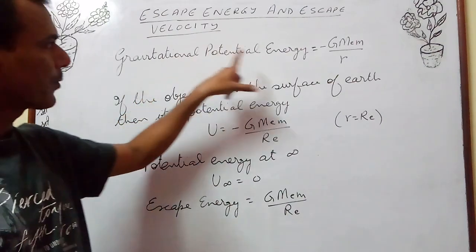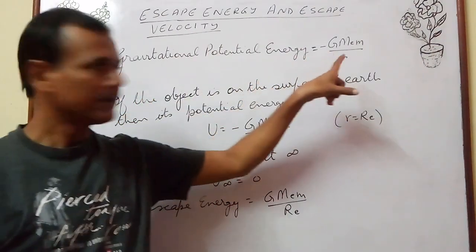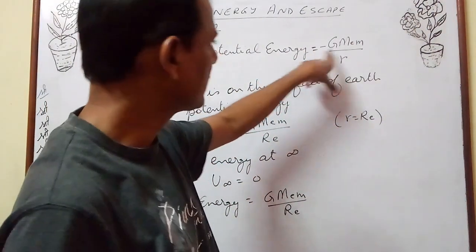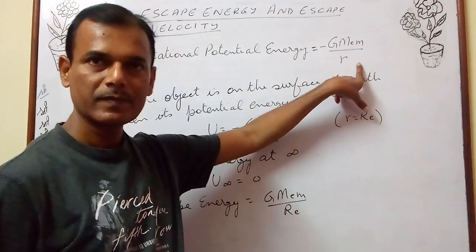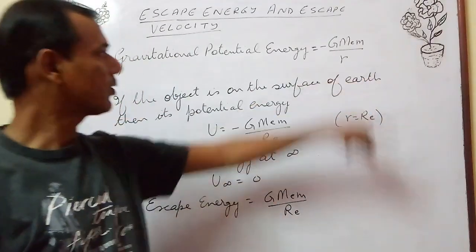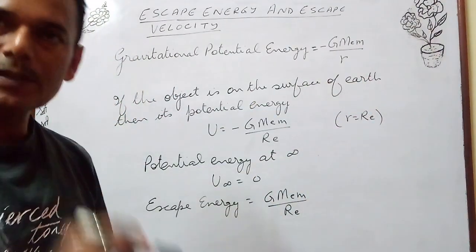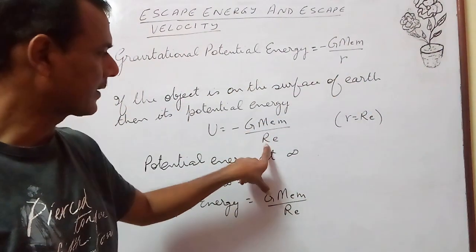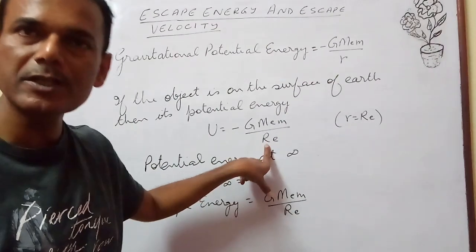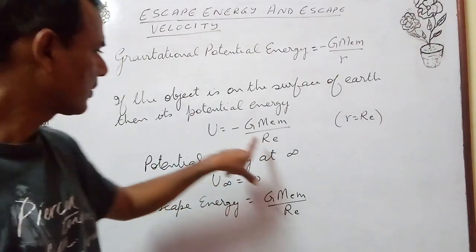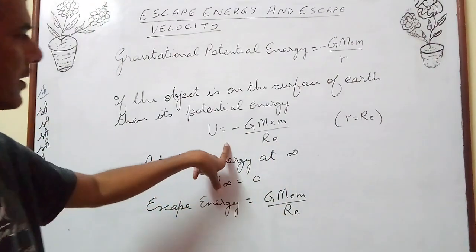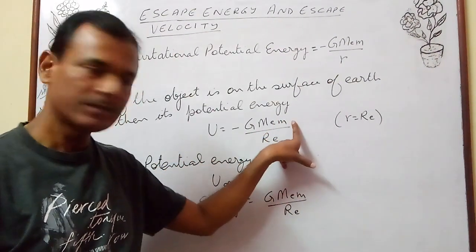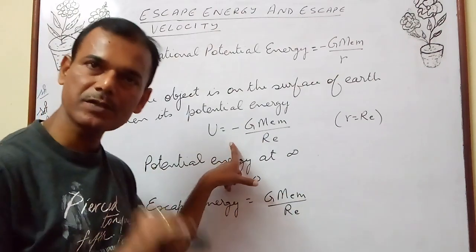Gravitational potential energy is given by the formula: minus G·Me·m divided by r. If you have to find the potential energy on the surface of earth, in place of r we write Re. Re stands for the radius of earth. This is the potential energy of an object of mass m which is on the surface of earth.